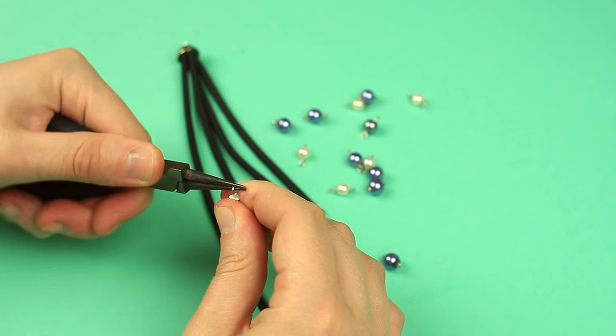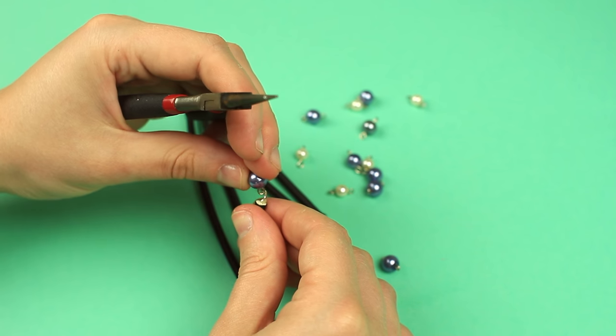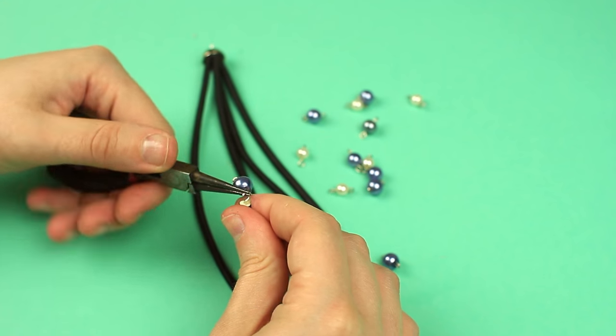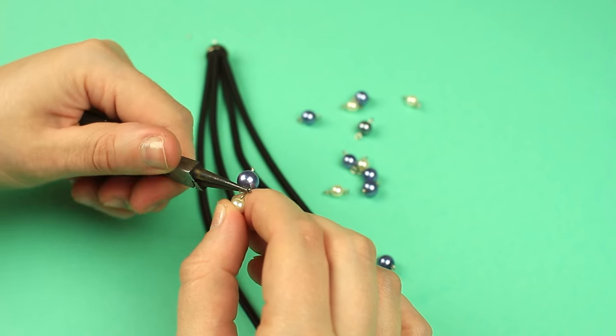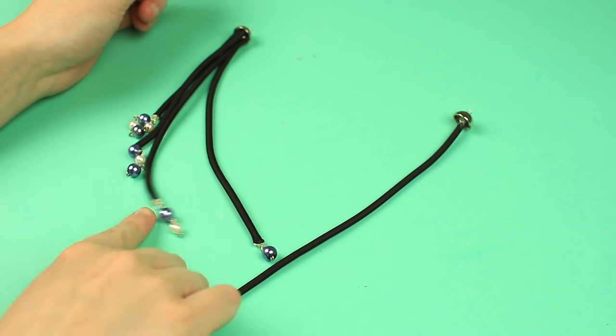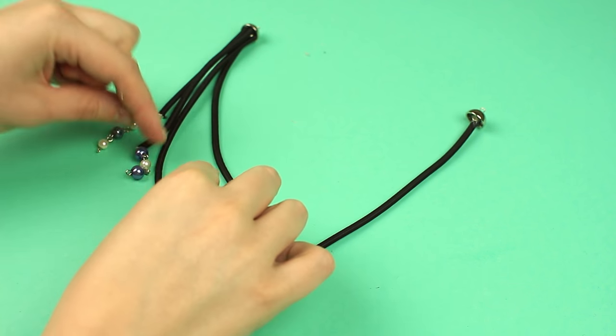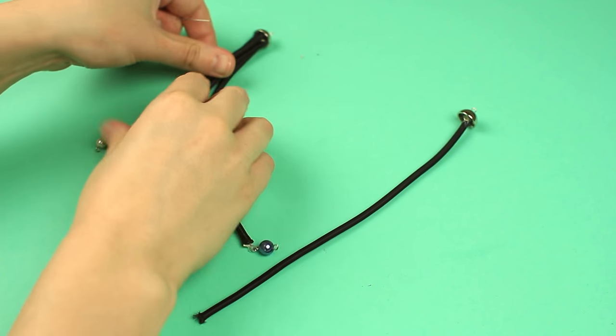Open a loop on the cord end. Put on a bead detail and close the loop. Add two more details in the same way, changing the colors. Fasten the bead details to the rest of the cords in the following way. The longer the elastic cord, the shorter the bead string.